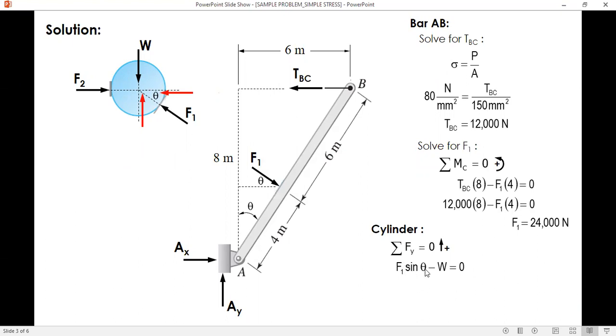Solving for theta or sin theta, we can make use of this triangle. Sin of theta is opposite over hypotenuse. Sin theta is 6 over 10 or simply 0.6.